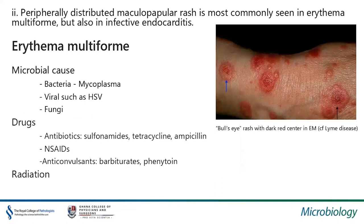The maculopapular rash could also be peripherally distributed — found only on the extremities. The most commonly seen is erythema multiforme, which you can also see in infective endocarditis. Erythema multiforme has a bull's-eye appearance similar to Lyme disease, but the center is usually a dark red center. From good history you can exclude this, because the etiologic agents are different. The microbial causes include Mycoplasma, Epstein-Barr virus, and some fungi. Many drugs — antibiotics, NSAIDs, anticonvulsants, and even radiation — may also cause erythema multiforme, usually on the extremities.